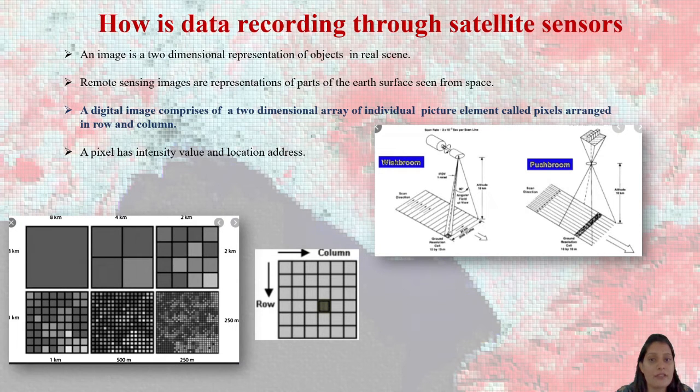Larger the pixel will be carrying what, will be carrying less information. But smaller the pixel will be giving the large area information because it will cover more area. This is how data is captured.